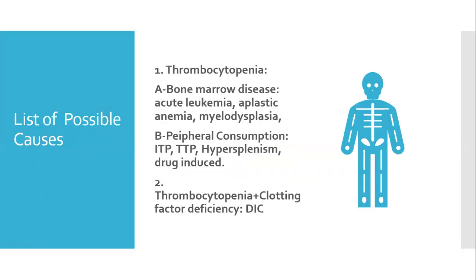The patient has thrombocytopenia, and since PT and PTT were not done, we can confirm thrombocytopenia alone, or consider a less likely possibility that the patient has thrombocytopenia and clotting factor deficiency. Returning to the first possibility — thrombocytopenia — it is either due to bone marrow disease, where the production of platelets is reduced.